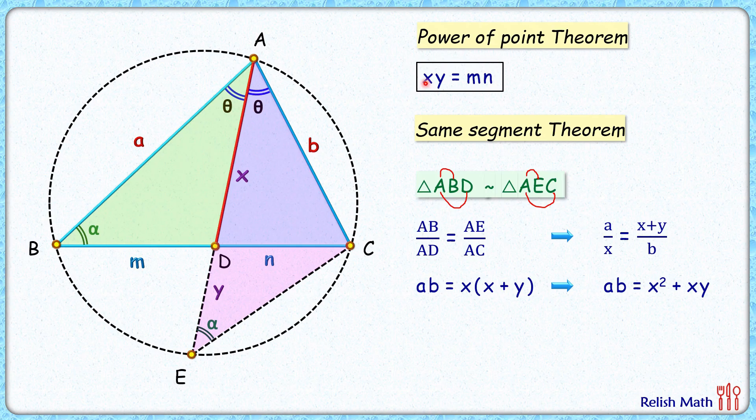But from our first observation, x times y is mn. So putting it here, we get ab equals x squared plus mn, or x squared equals ab minus mn. And that's what we had to prove. Hence proved.